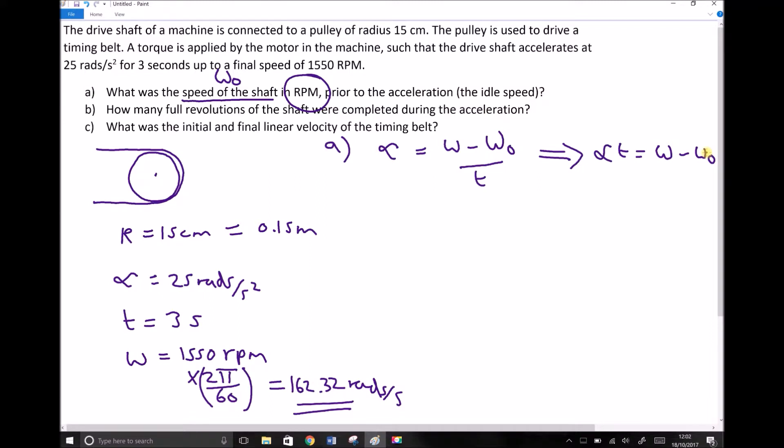So the next thing I'm going to do to get omega zero on its own is I'm going to minus omega from each side. And I'm going to write this on the next line. That means minus omega zero because I've minused omega equals alpha t minus omega.